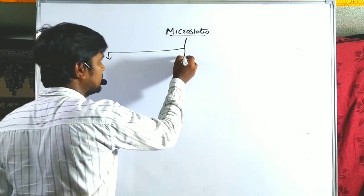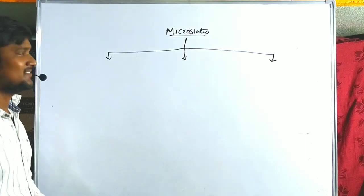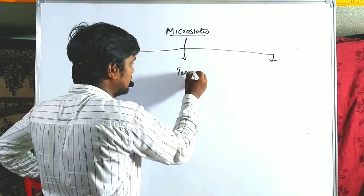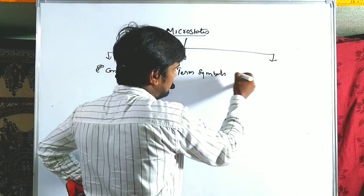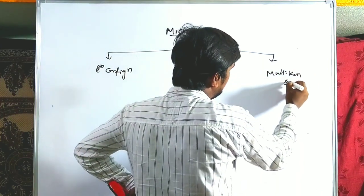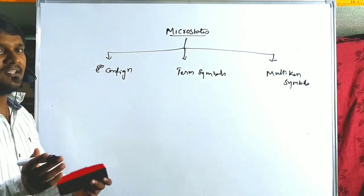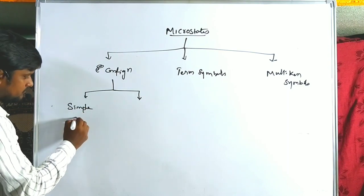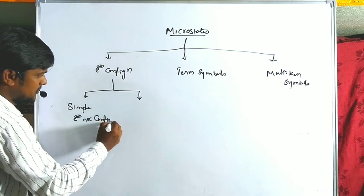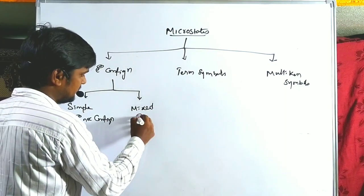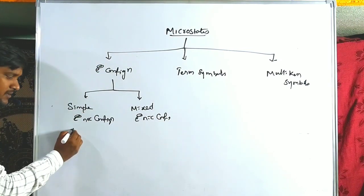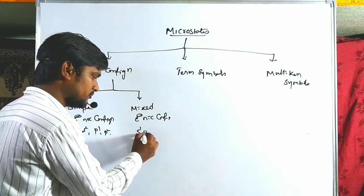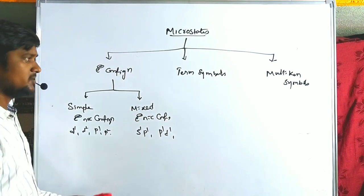The calculation of microstates is classified into three types. First is electronic configuration, which can be simple (e.g., D1, D2, P2) or mixed (e.g., S1P1, P1D1, D1F1). Second is term symbols — either a term without J, or a ground term symbol with J value. Third is Mulliken symbols used in group theory.